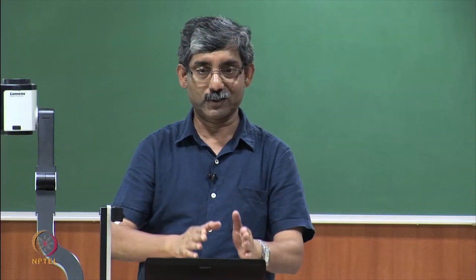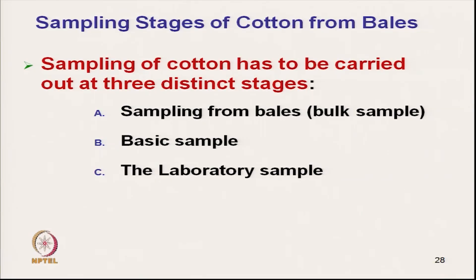Starting with cotton fiber, which comes in bale form, sampling of cotton has to be carried out at 3 distinct stages when sampling from a bale. First is taking the bulk sample from the bale, then from the bulk sample we collect the basic sample, and from the basic sample we collect the laboratory sample. These are the 3 stages of sampling of cotton fiber from the bale.